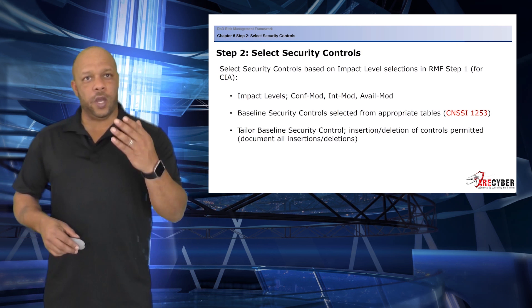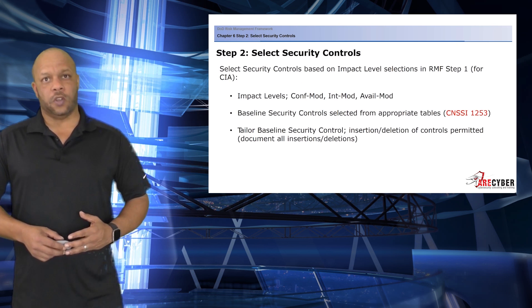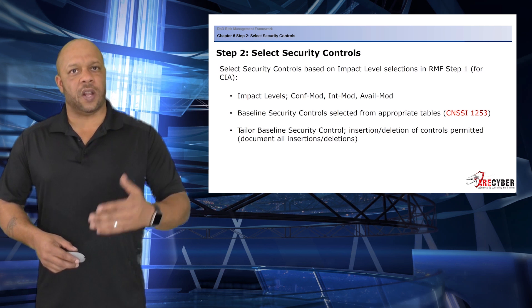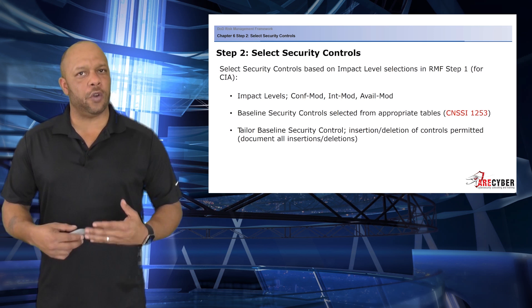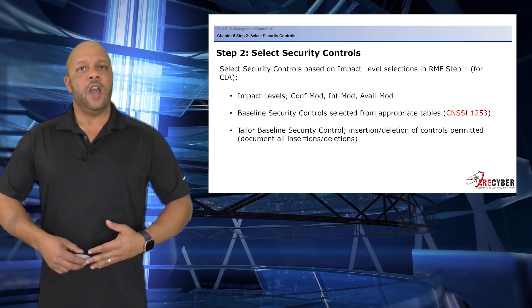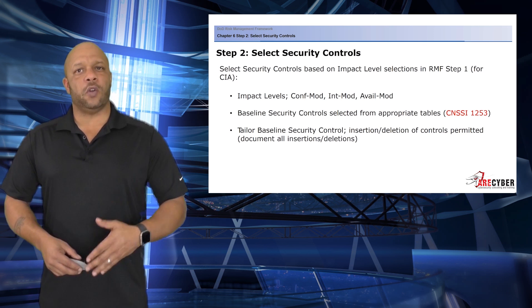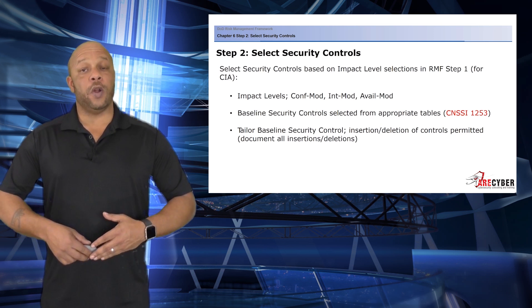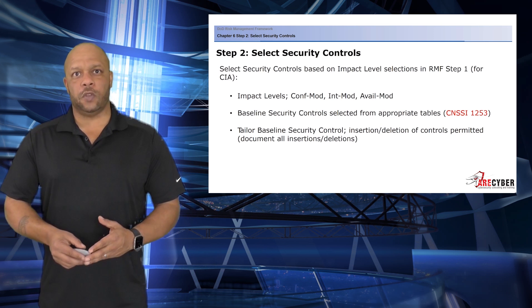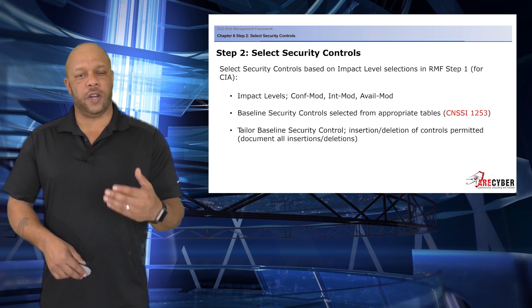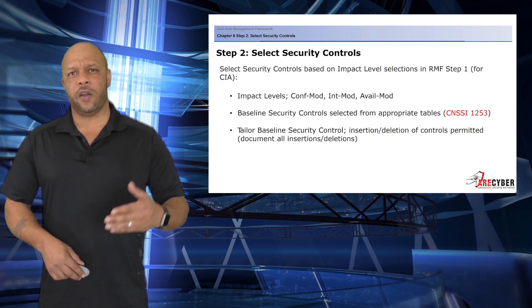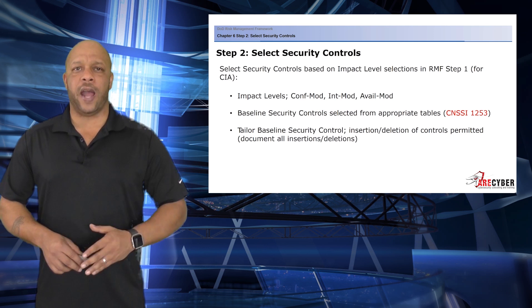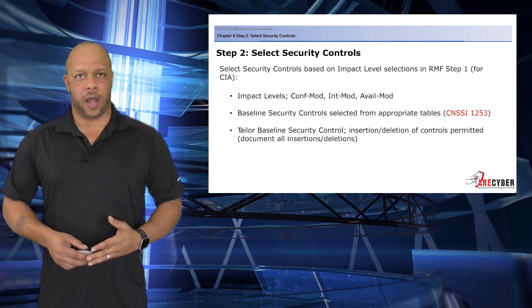In step one, when we categorized our system, we developed a common baseline of security controls. Those were based on the impact levels from our selections. Those impact levels were based on confidentiality, integrity, and availability, and the overall impact of compromise.